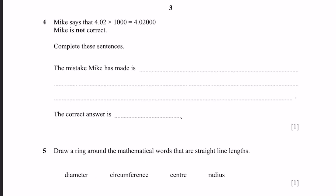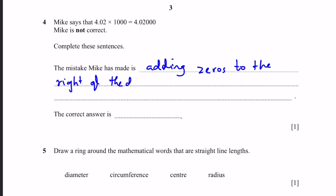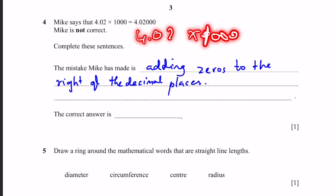Question 4. Mike says that 4.02 multiplied by 1000 equals 4.0200. Mike is not correct. The mistake Mike made is adding zeros to the right of the decimal places, as if treating it like a whole number. The correct answer is that we move the decimal point three places to the right, giving 4020.